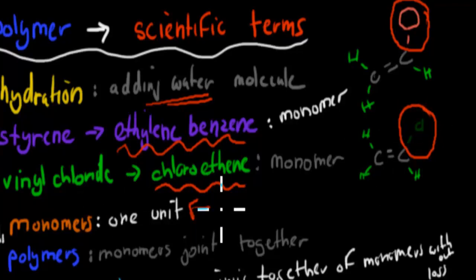Monomers are just one unit. For example, this here is just one unit. If you add them together, it becomes a polymer. Polymers are many units joined together. Monomers joined together, one after the other, makes a polymer.